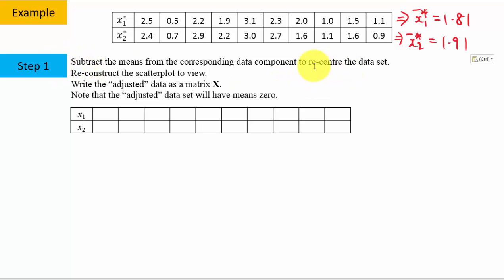So to re-center the data set, I'm now going to subtract the mean from the corresponding data. So for this data 2.5, I'm going to subtract its mean of 1.81. This will give me 0.69. And for this data 2.5, I'm going to subtract its mean of 1.91 which will give me 0.49. I'll do the same for the next data pair. I'm going to take 0.5, 0.7, subtract the mean vector. This gives me negative 1.31 and negative 1.21. So keep doing that.